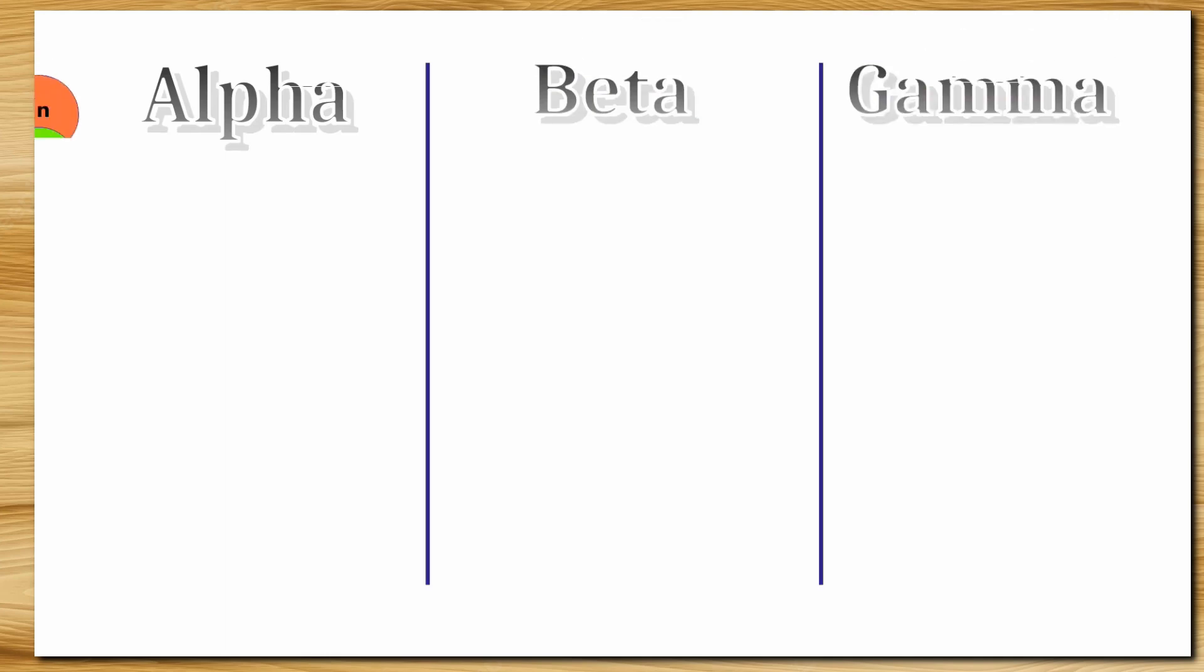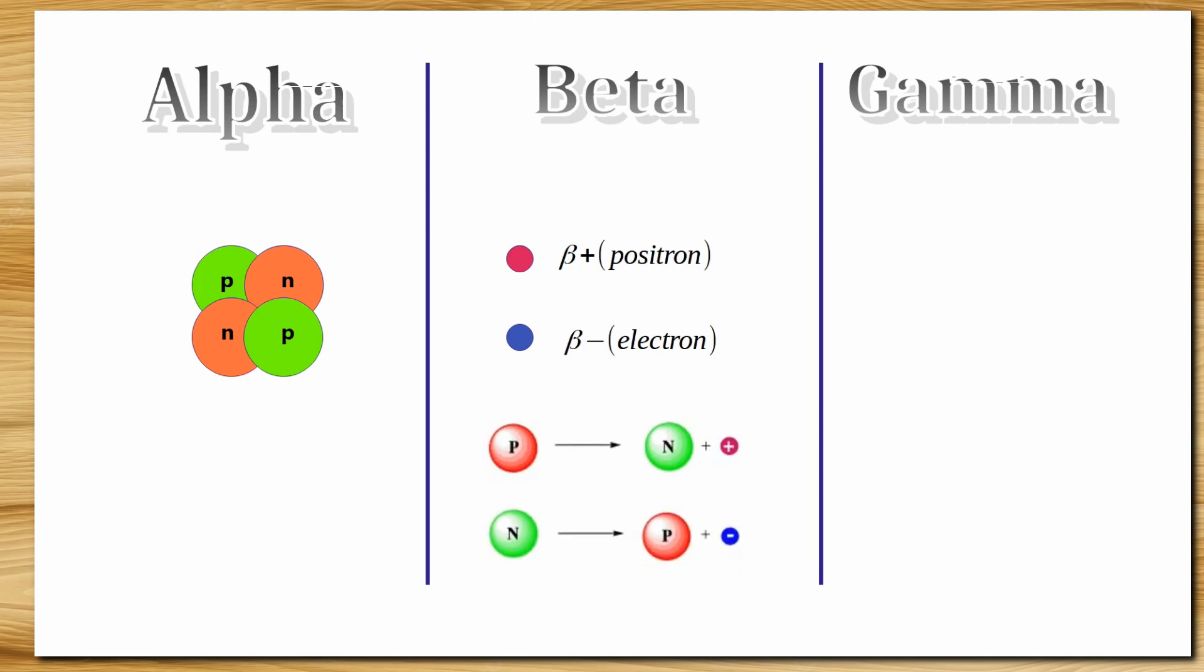Alpha particle is composed of two neutrons and two protons, that is a nucleus of a helium atom. Beta particles are of two types: one is beta plus or positron, another is beta minus or electron. They are anti-particles of each other. Beta minus is emitted when a proton converts to a neutron, and beta plus is emitted when a neutron gets converted to a proton. Lastly we have gamma ray, which is just electromagnetic radiation of very high frequency.